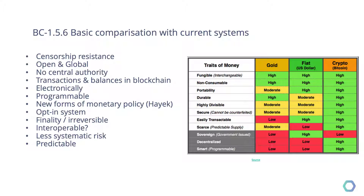Let's discuss this one very shortly. The traits of money — as you can see, there are multiple properties of money from top to bottom: fungibility, consumability, portability, and so on. I also see scarcity here, which is predictable supply in this case. Bottom line once more is that it all depends on what you are going to use it for.